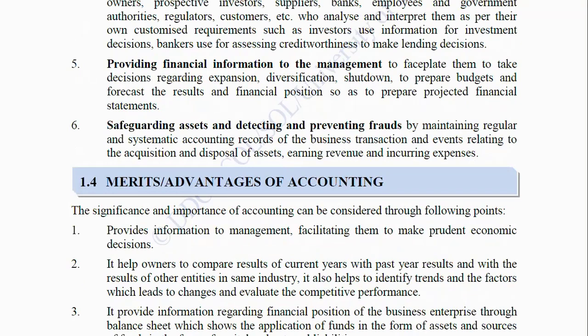Seventh, safeguarding assets and detecting and preventing frauds by maintaining regular and systematic accounting records of the business transactions and events relating to the acquisition and disposal of assets, earning revenue and incurring expenses.